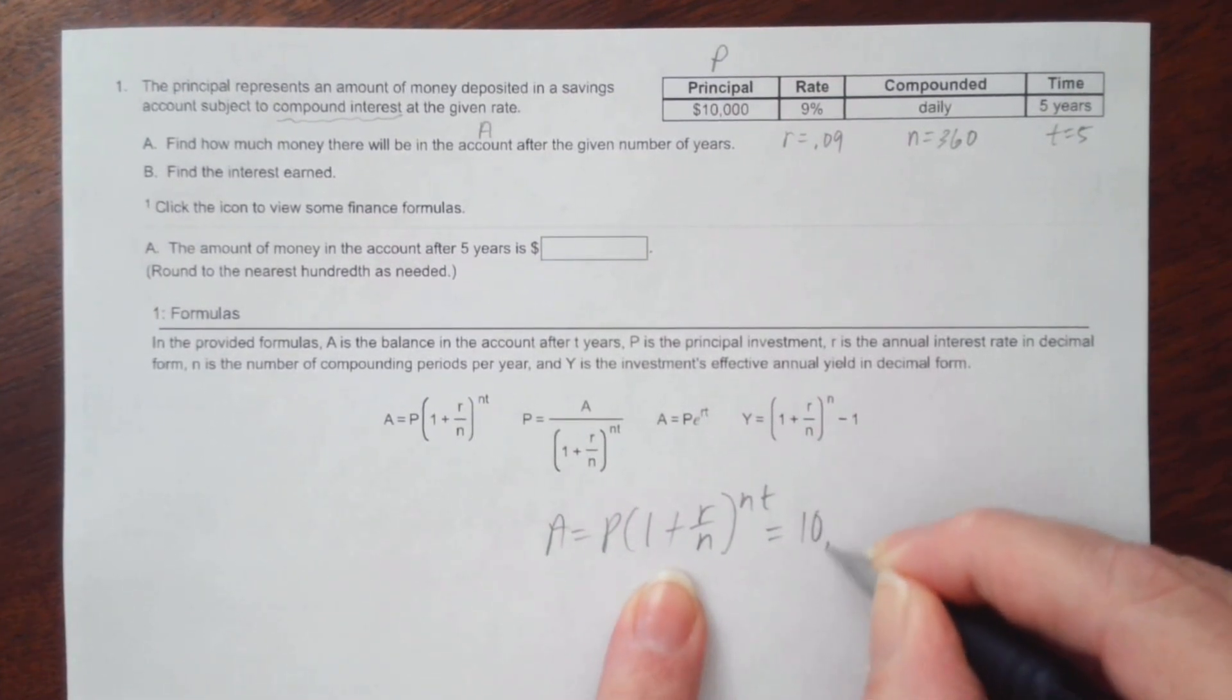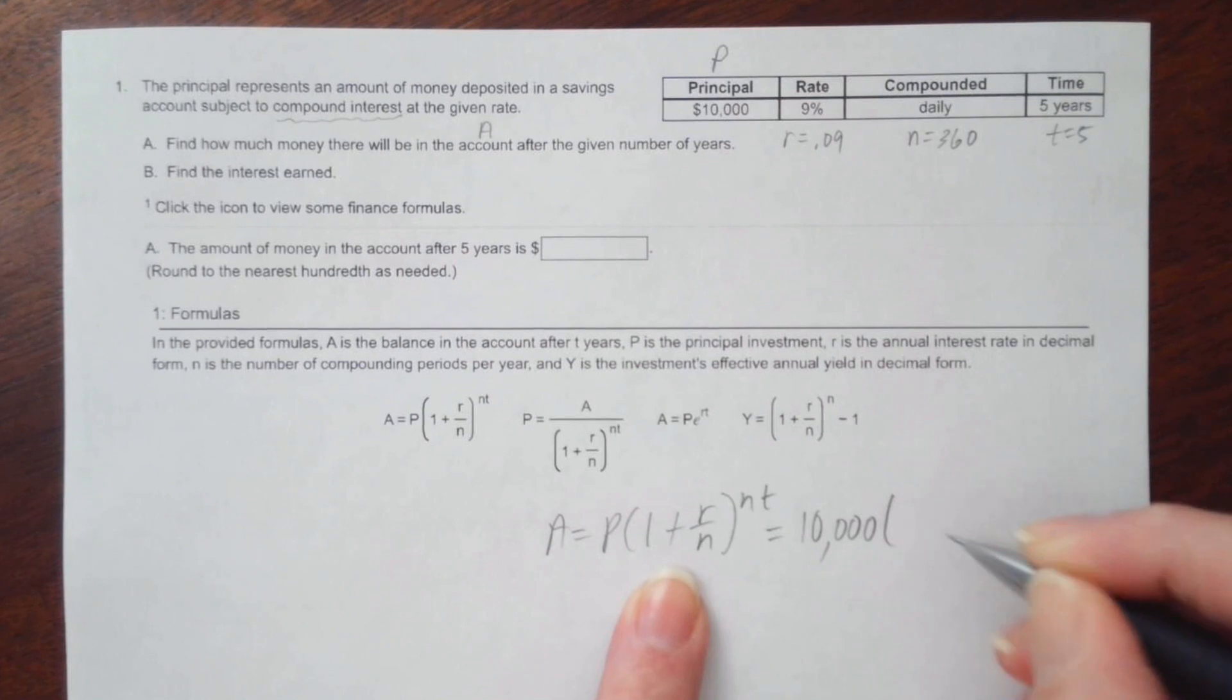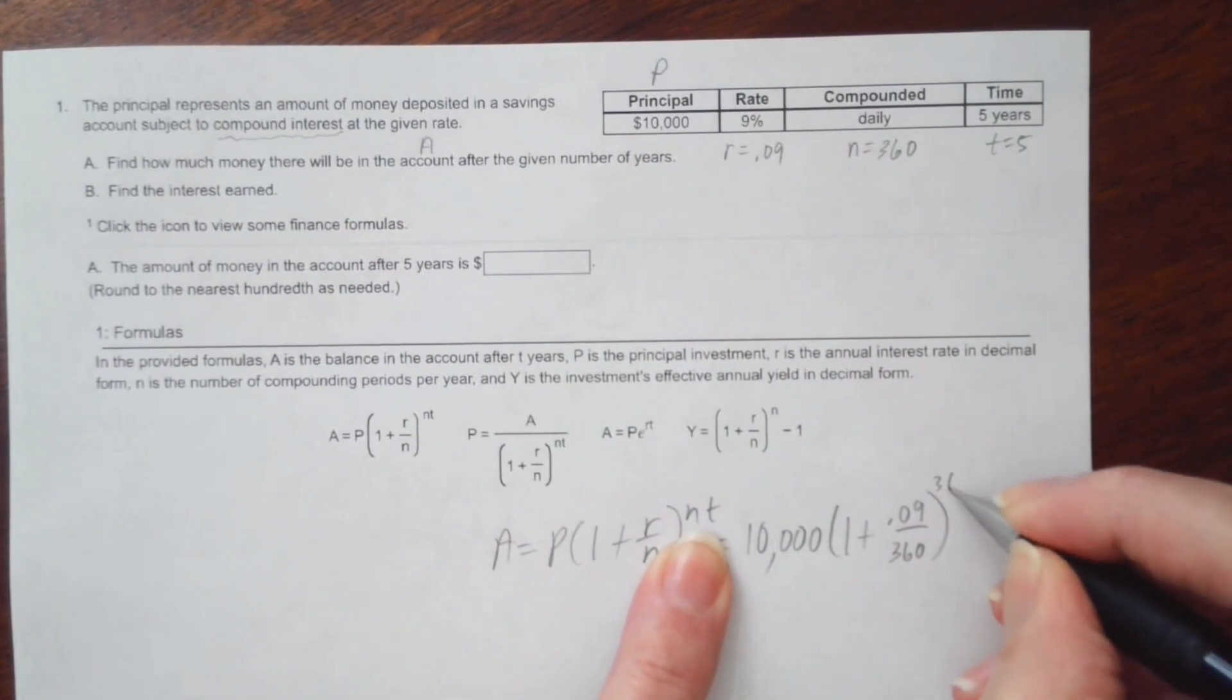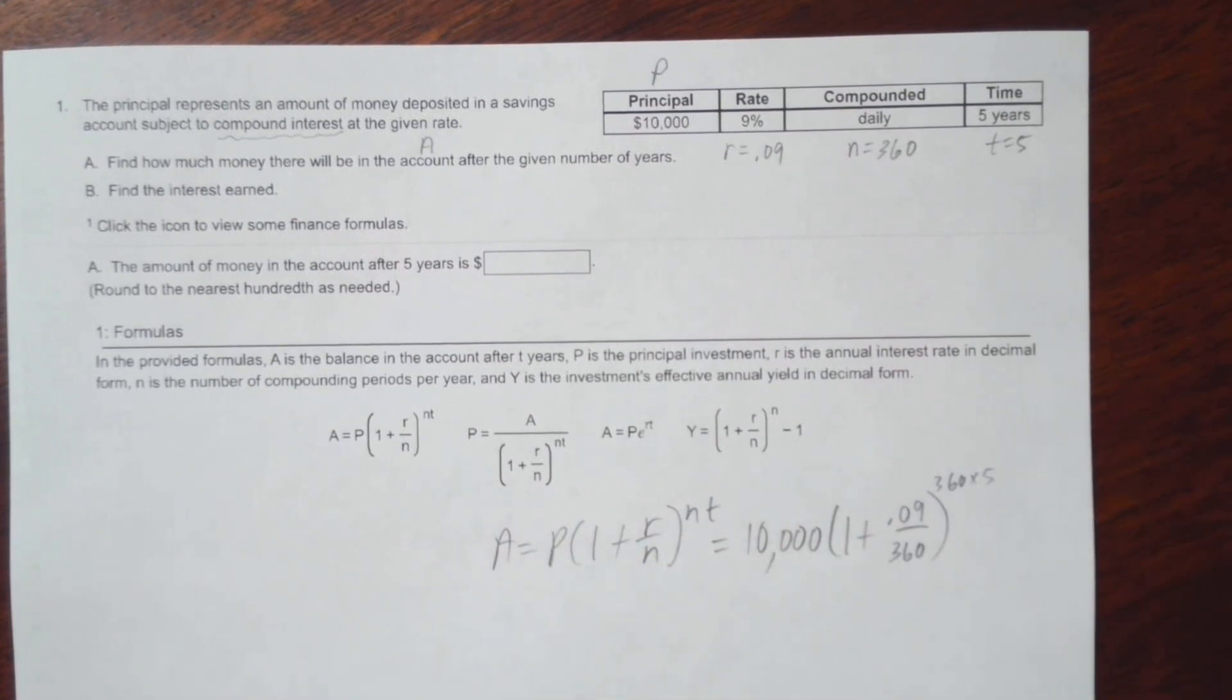And P here is 10,000. And it's 1 plus 0.09 over 360. And then it's to the 360 times 5 power. And so we need to put that into the calculator.